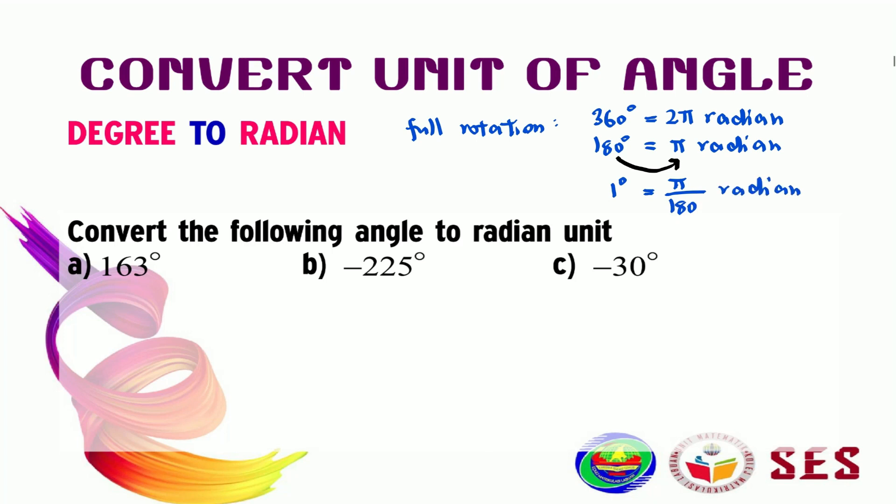And because of this relation, we can convert any angle in degrees by multiplying it with this to get its value in unit radian. For example, here,